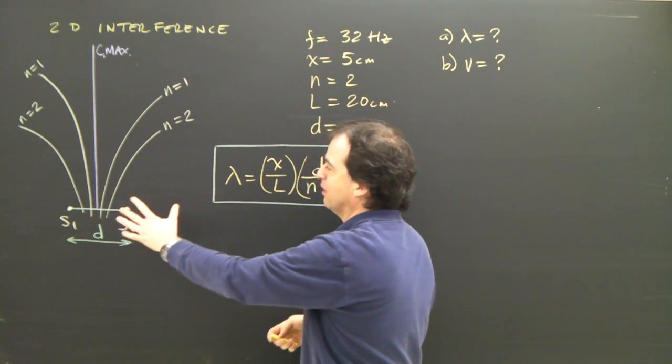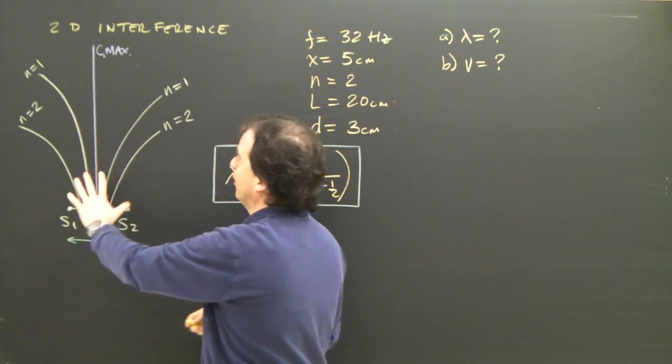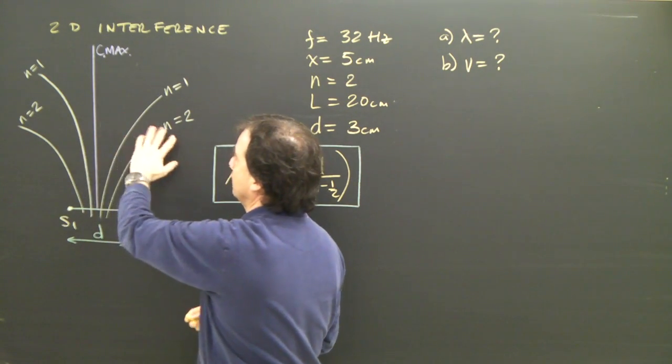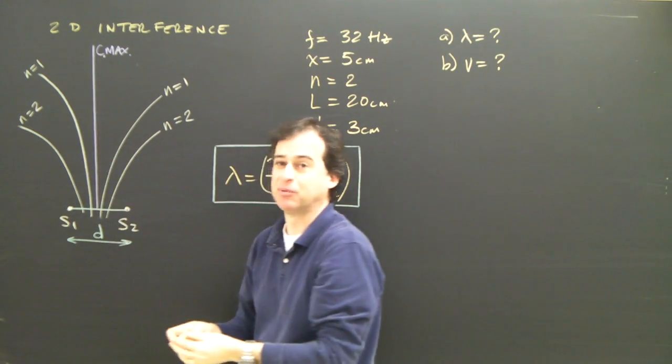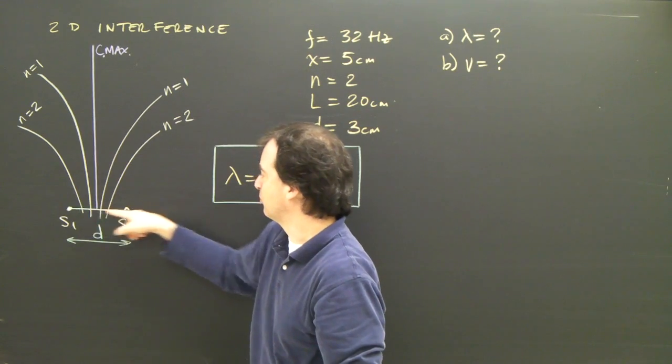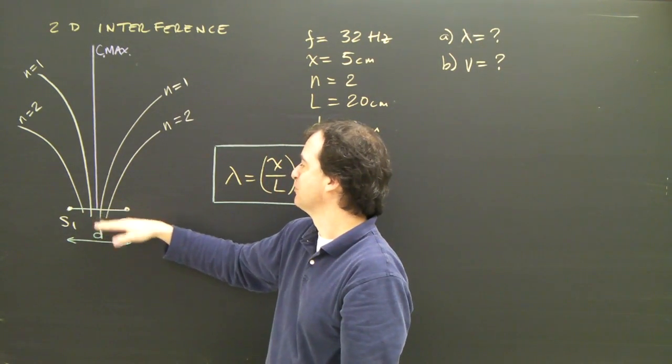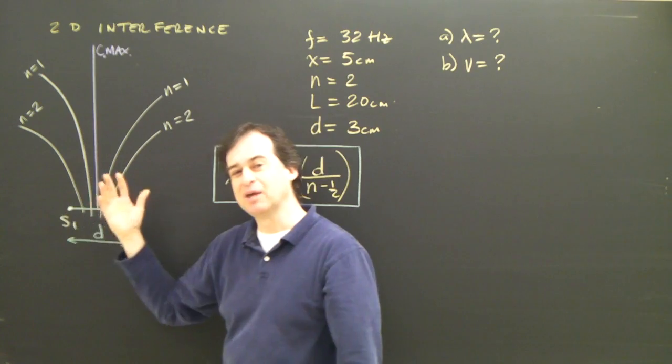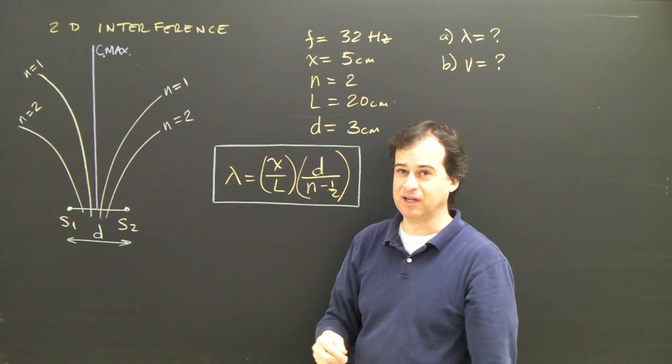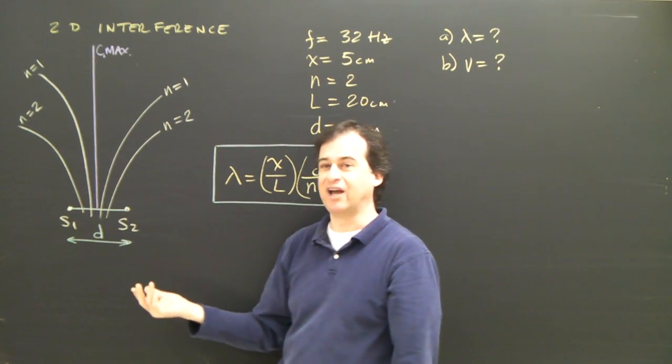So in this problem, I've got that same sort of pattern. I've got the two nodal lines marked and my central maximum, the part where the water is turbulent, and it's at right angles between this line between the two sources. So I've got this pattern, and we came up with a formula PS2 minus PS1 equals N minus a half lambda.